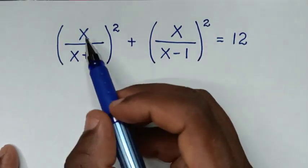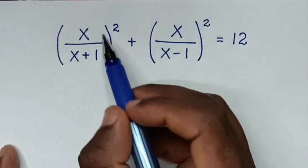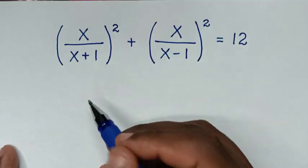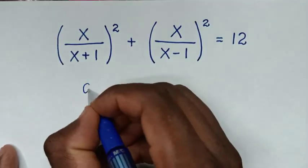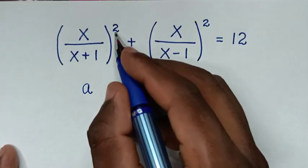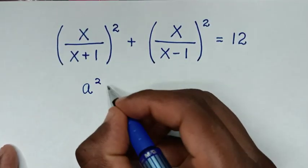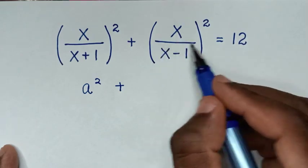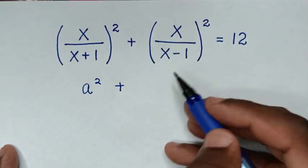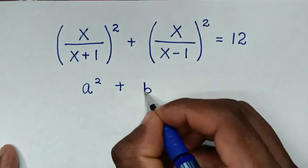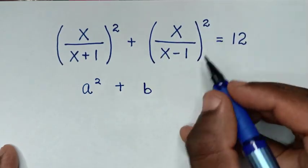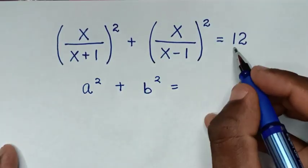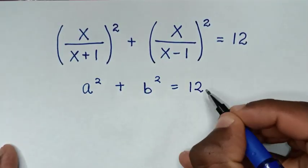In the first step, we let a = x/(x+1), so that term becomes a². Then for x/(x-1) we let b, so that term becomes b². The equation becomes a² + b² = 12.